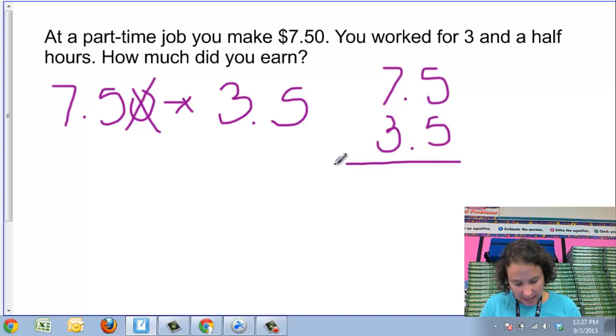When I am multiplying decimals together, I do not have to line up my decimal points. What you actually want to do is line up your last place value there. So I'm lining up the fives. It's just a coincidence that the decimals line up. Now I'm going to multiply this out. I'm going to pretend that those decimal points are not even there and that I'm multiplying 75 times 35.